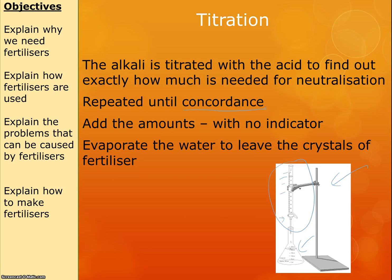Now that we know the exact volumes, we do the reaction again but without the indicator, because the indicator would pollute the product as an impurity. When we do our neutralisation reaction, the base and acid make a salt plus water. We don't want the water, so we just leave the solution to evaporate and we're left with crystals of our salt. It's just a couple of pieces of equipment to remember and the idea that we do it first with the indicator to find out how much, then without, to get our pure product.